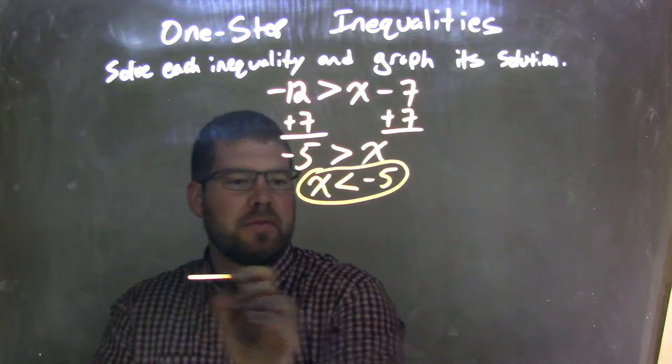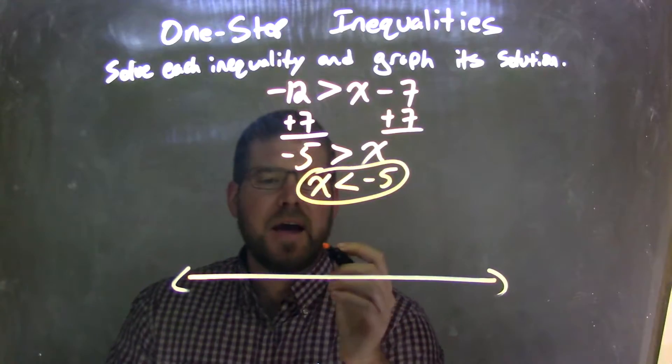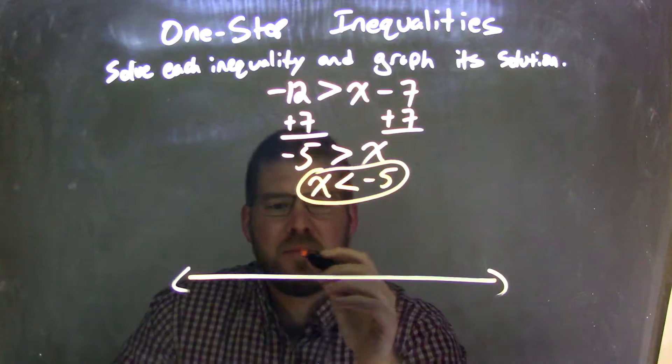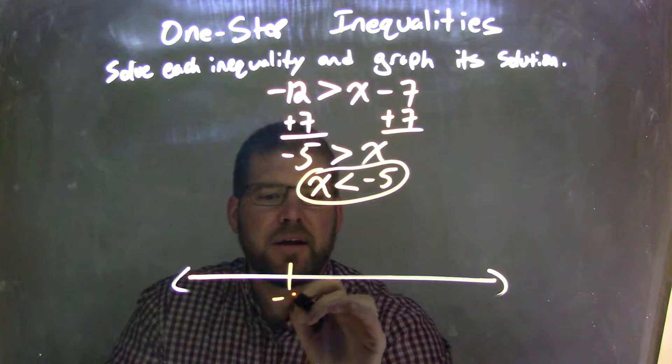So how do I graph that? Well, let's go make a number line here, and we're going to make sure we have negative 5 in there. Some people always put whatever number you're starting at right in the middle, so let's go right here. Negative 5.